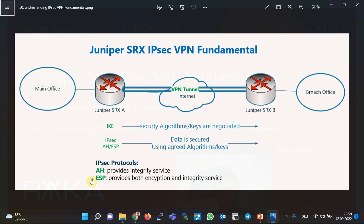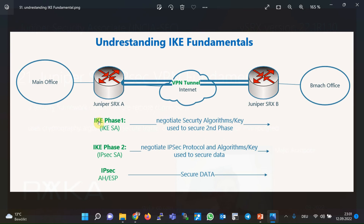IKE is the first step of IPsec secure communication. The goal is to negotiate the security algorithm and key used to secure data itself. IKE protocol runs over UDP port 500 and uses two phases. In the first phase, IKE negotiates the security algorithm and key to secure IKE's second phase — this is called the IKE Security Association. In the second phase, secured by algorithms negotiated in phase one, the IPsec protocol (AH or ESP), cryptographic algorithm, and key to encrypt data are negotiated — this is called the IPsec Security Association.